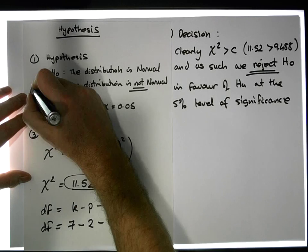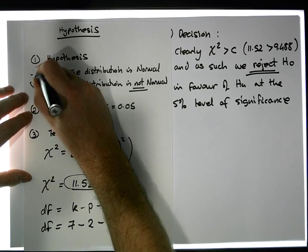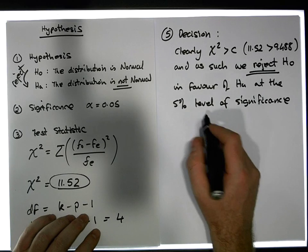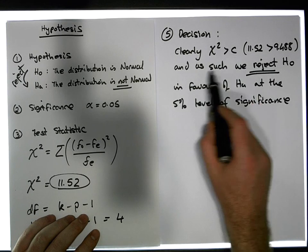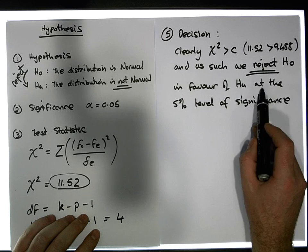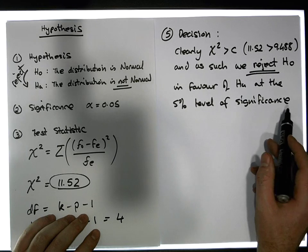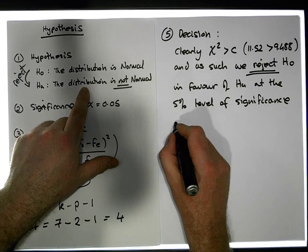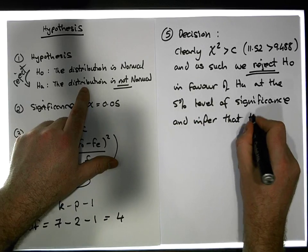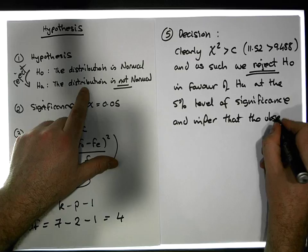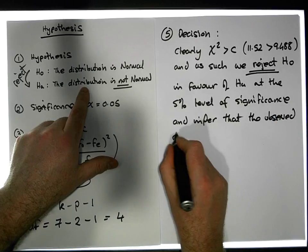Now we can make our inference. Because we're rejecting, clearly chi-squared is bigger than the critical value, and as such we reject H₀ in favor of Hₐ at the five percent level of significance, and we infer that the observed distribution is non-normal.